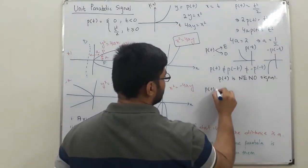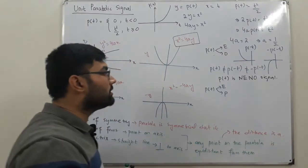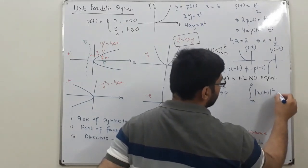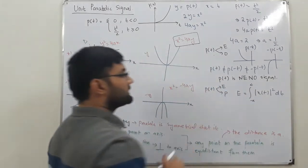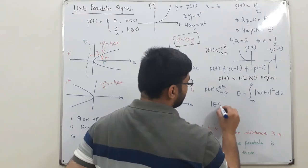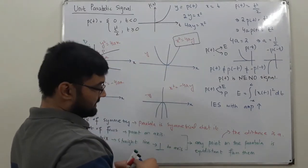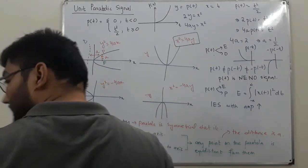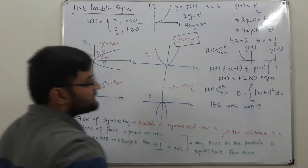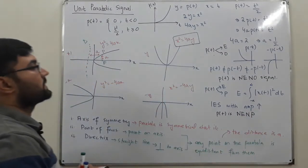Finally, is P(T) an energy signal or a power signal? The energy formula is the integral from −∞ to ∞ of |x(T)|² dT. However, from the properties of the waveform, P(T) is an infinite extension signal with increasing amplitude. This means that P(T) is neither an energy signal nor a power signal.